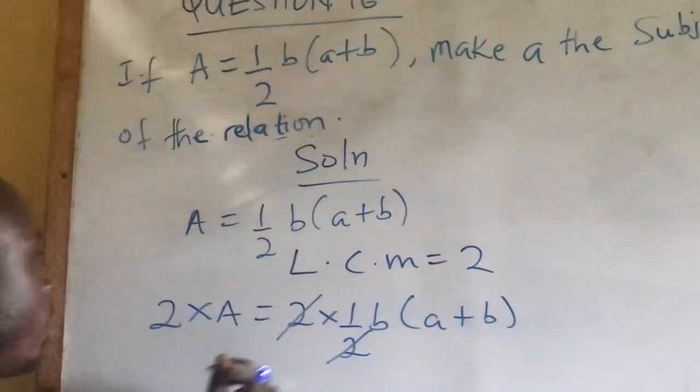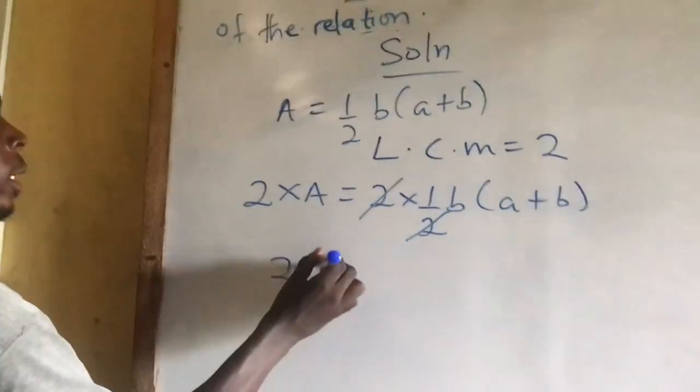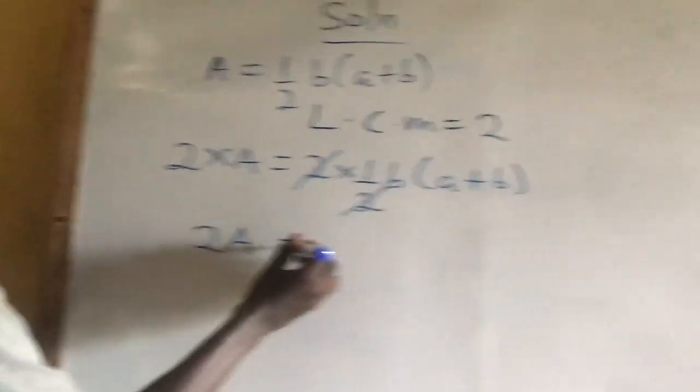So this will cancel this. It becomes 2A because 2 times A is 2A, equal to B, A plus B.